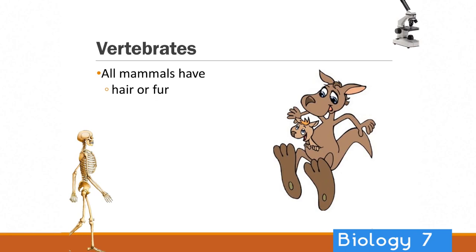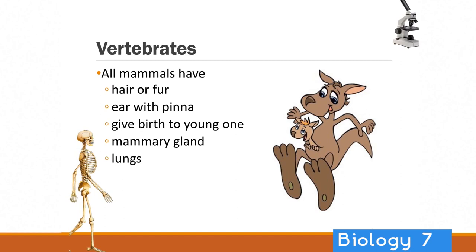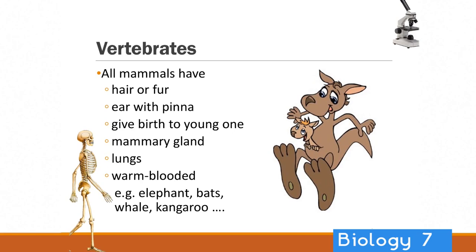All mammals are grouped together because they've all got hair or fur, they've got ears with pinna, they give birth to live young, they will breastfeed milk to their young, and they've got lungs — that's an important one. Think of dolphins and whales: they are mammals. Even though they live in the water, they've got lungs and come up to the surface to breathe. And they're warm-blooded, so they maintain their own body temperature.